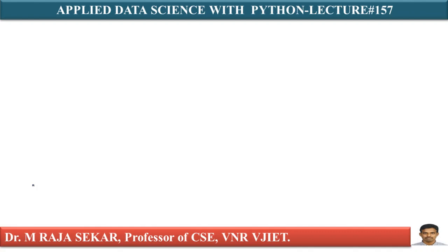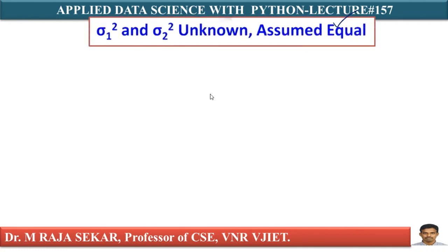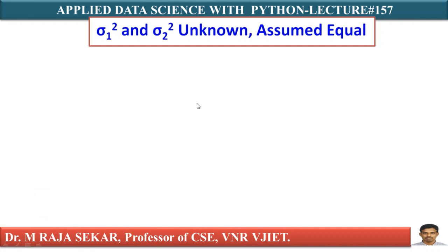Welcome to Rajashekar Classes on Applied Data Science with Python. This is lecture number 157. In this lecture, we will try to understand a problem where Sigma1 square and Sigma2 square are unknown, but we are assuming them to be equal.